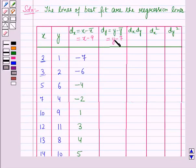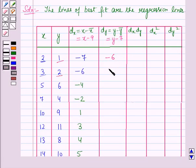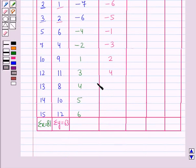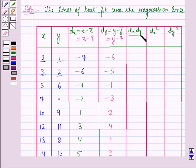For dy = y minus 7: for y = 1, dy = −6. For y = 2, dy = −5. For y = 6, dy = −1. For y = 4, dy = −3. For y = 9, dy = 2. For y = 11, dy = 4. For y = 8, dy = 1. For y = 10, dy = 3. For y = 12, dy = 5.